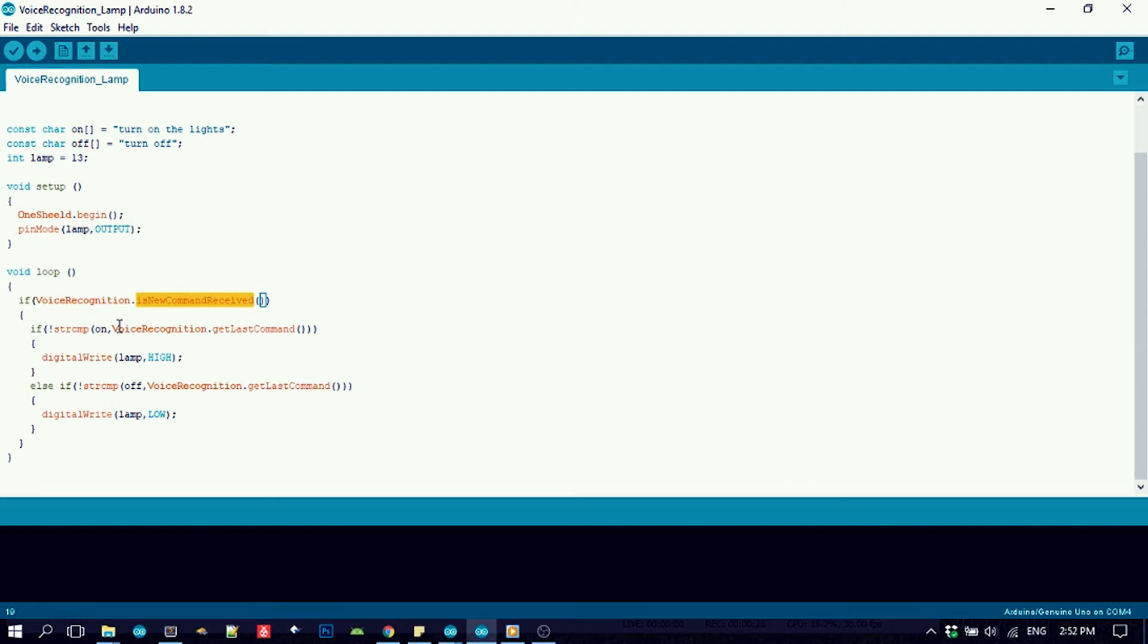I've made a check if there is a new command by calling voiceRecognition.isNewCommandReceived. In this check, I've grabbed the new command using voiceRecognition.getLastCommand and made a simple string compare between it and a previously saved command. If these strings are identical, turn on the lights; if not, turn it off.